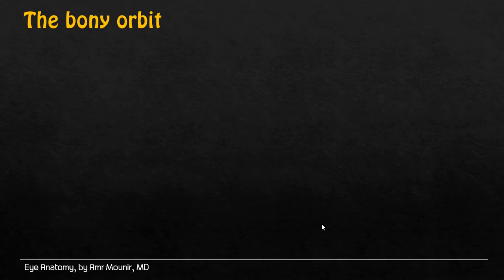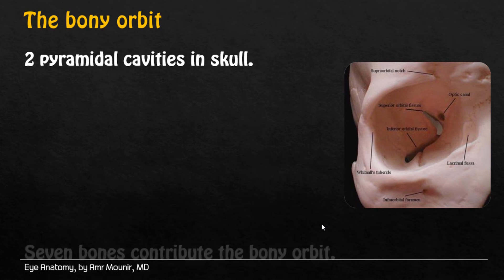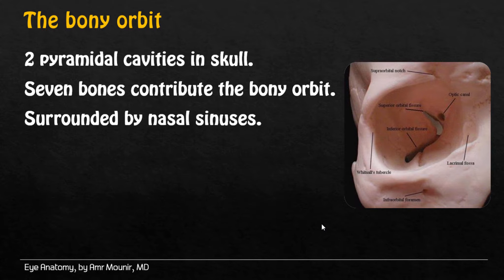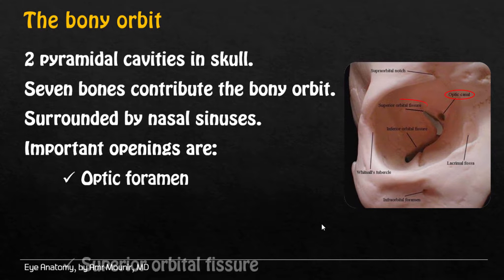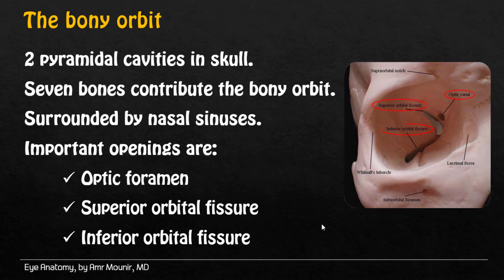The pony orbit consists of two pyramidal cavities in the skull. Seven bones contribute the pony orbit, surrounded by nasal sinuses. Important openings in the pony orbit are the optic foramen, superior orbital fascia, and inferior orbital fascia.